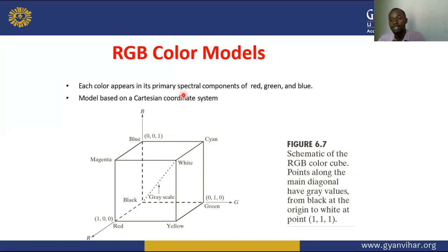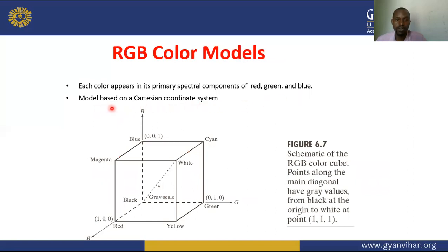RGB is used in colour monitors, video cameras, and displays. Each colour appears as its spectral component — red, green, and blue, which are the primary colours. We can represent RGB in a Cartesian coordinate system where at coordinate 001 we have blue, at 010 we have green, at 100 we have red, and at the origin 000 we have black.